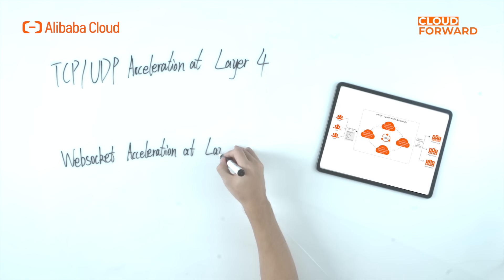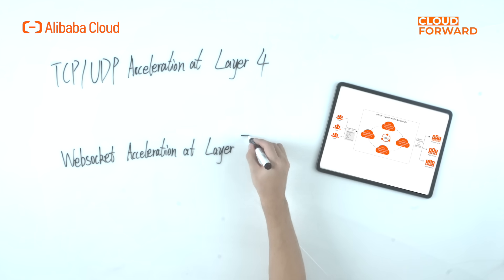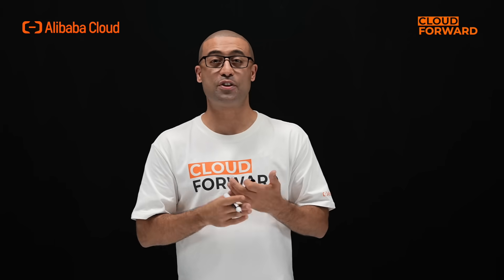Secondly, DCDN also supports WebSocket acceleration at layer 7, and TCP and UDP acceleration at layer 4, to meet various requirements of different business needs. Thirdly, DCDN has more than 2,800 edge POPs distributed worldwide, providing acceleration service globally as well as scalability to match your business growth.